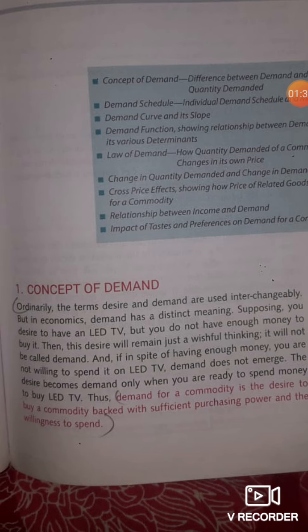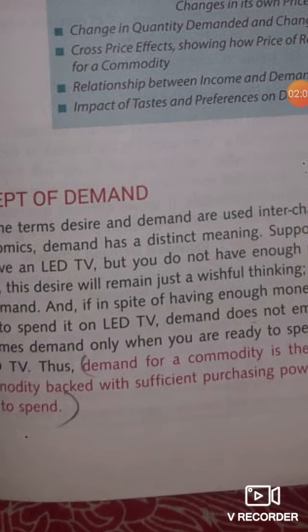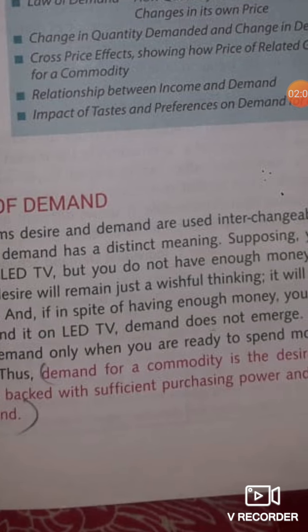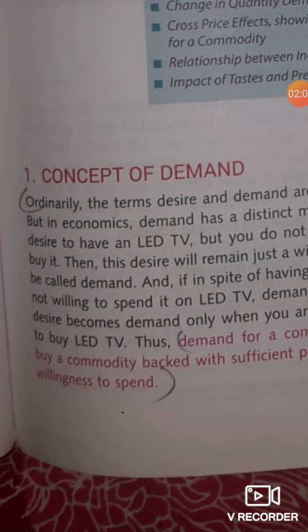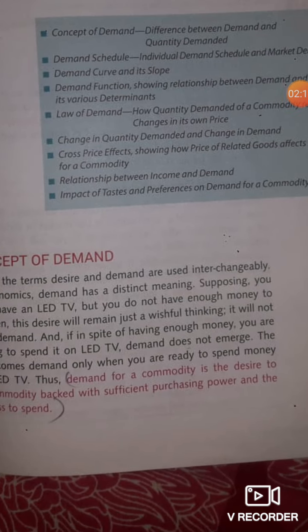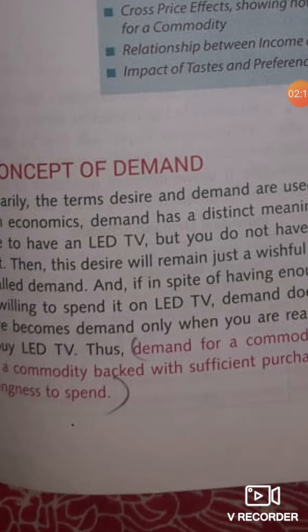This want will change into demand only and only when three conditions are satisfied: you have money, you are ready to spend that money on a particular good, and this is at a particular point of time or period of time. Demand for a commodity is the desire to buy a commodity backed with sufficient purchasing power and the willingness to spend the money.